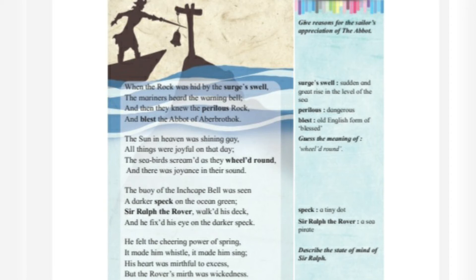Stanza five: 'The sun in the heaven was shining gay, all things were joyful on that day, the seabirds screamed as they wheeled round, and there was joyance in their sound.' Stanza six introduces Sir Ralph the Rover, a pirate, who walked his deck and fixed his eye on the darker speck — 'speck' means a tiny dot. Sir Ralph the Rover was a pirate who noticed the Inchcape Bell floating on the waves.